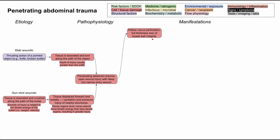Hollow viscous perforation is when you have a piece of the GI tract that's broken and you have full thickness loss of bowel wall integrity. This can be very painful and can cause abdominal distension. As contents of your GI tract spill out into your peritoneal or retroperitoneal space and cause inflammation, you'll have peritonitis. You can have GI distress — nausea, vomiting, and obstipation, which is really bad constipation.